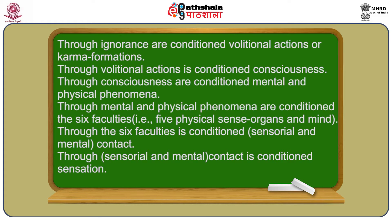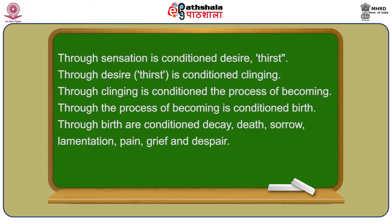Through the six faculties is conditioned sensorial and mental contact; through contact is conditioned sensation; through sensation is conditioned desire or thirst; through desire is conditioned clinging; through clinging is conditioned the process of becoming; through becoming is conditioned birth; and through birth are conditioned decay, death, sorrow, lamentation, pain, grief and despair. This is how life arises, exists, continues, and how suffering arises.